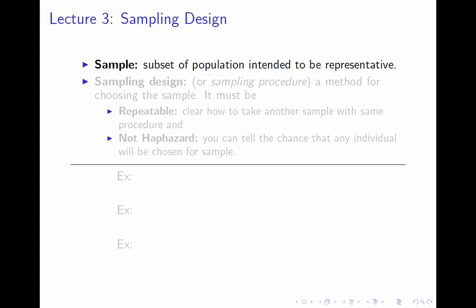A sample is a subset of the population about which you gather data. It's generally meant to be representative of the population as a whole. We're going to address how you accomplish this and what happens when it's not true. We're going to be discussing sampling design or sampling procedure, which is the method for choosing the sample. When people are talking about the sampling design, they often say just 'the sample,' which makes it very confusing — you may see that in real life.